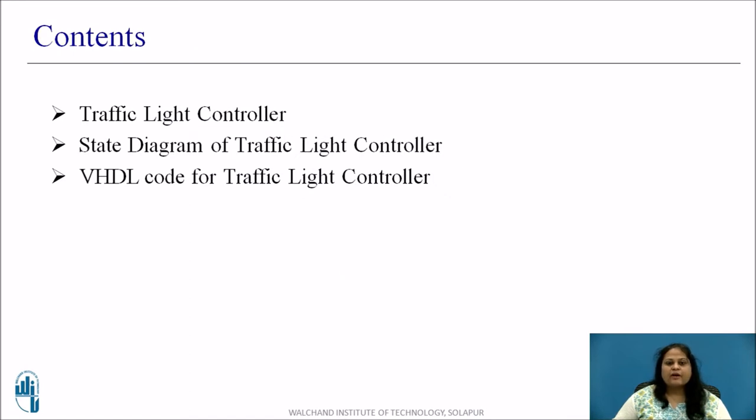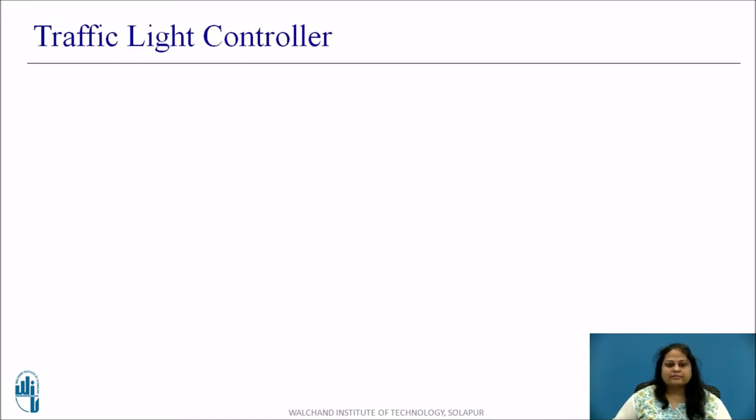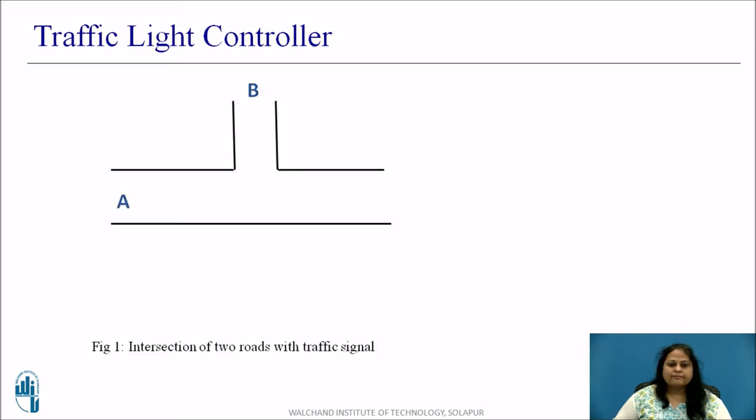These are the contents we will be covering in this session. Let us design a sequential traffic light controller for the intersection of two streets. Before starting to design let us first understand the working of the traffic light controller. Consider the intersection of two streets A and B. Street A is the main street.